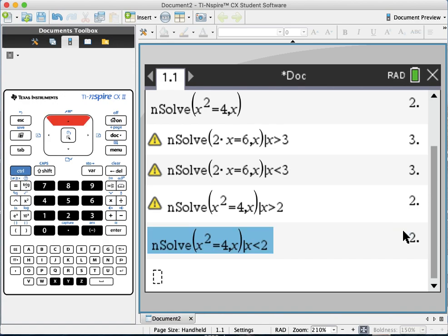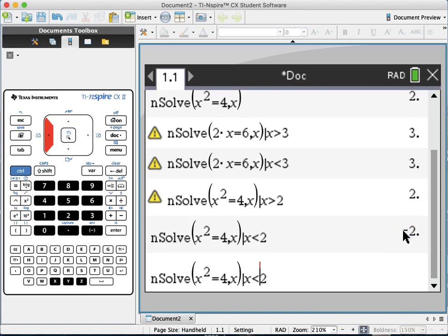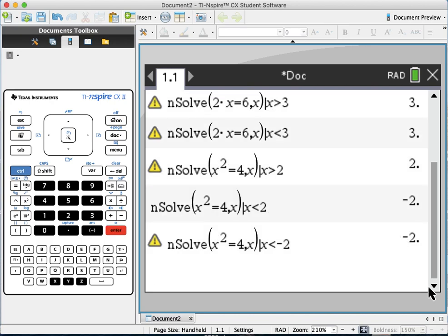Do I have another solution? It makes sense to check for solutions smaller than negative 2 this time. There's no other solution.